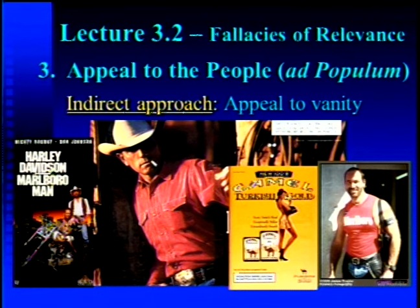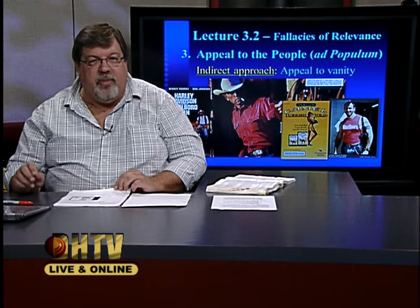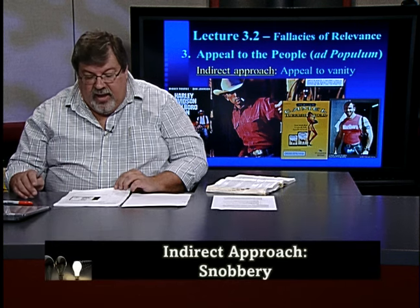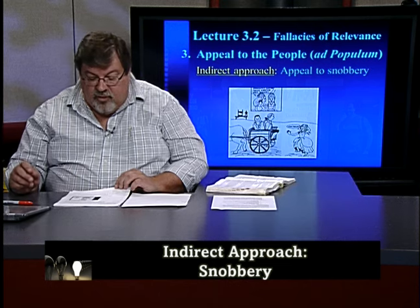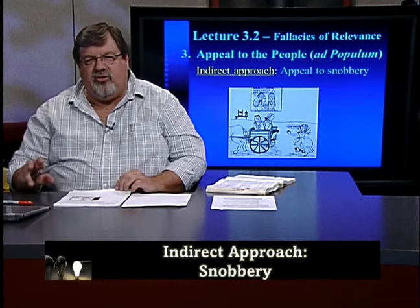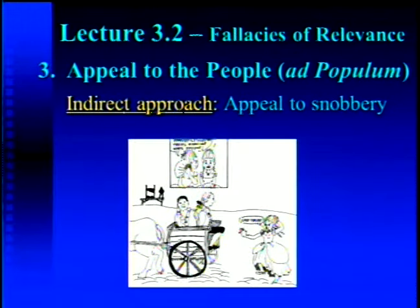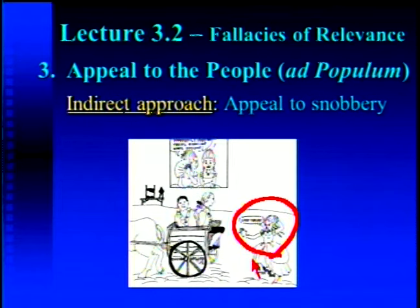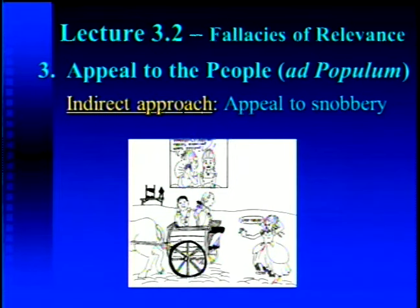This is appeal to the people — appealing to our vanity and the way we look. Then there's another indirect approach: the appeal to snobbery. The appeal to snobbery addresses people who think they're already part of the in-crowd and want to remain there. In our cartoon, there's a couple of men tied up being taken by a horse-drawn carriage to see Monsieur Le Guillotine during the French Revolution — they're going to get their heads chopped off. A lady wants to join the group, and the ladies at the top say, 'naturally, they're taking everyone who's anybody these days.' This is an example of the appeal to snobbery.